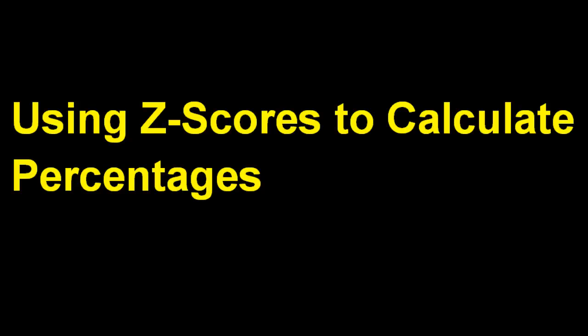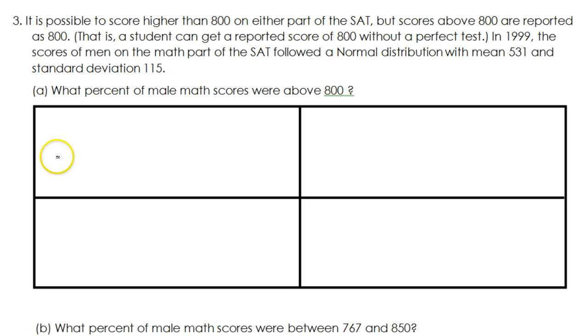This video is about using z-scores to calculate percentages. It is possible to score higher than 800 on either part of the SAT, but scores above 800 are reported as 800. That is, a student can get a reported score of 800 without a perfect test. In 1999, the scores of men on the math part of the SAT followed a normal distribution with a mean of 531 and standard deviation of 115.